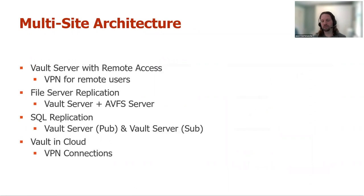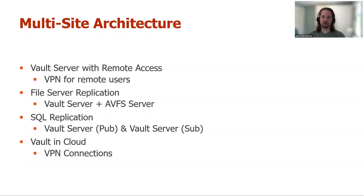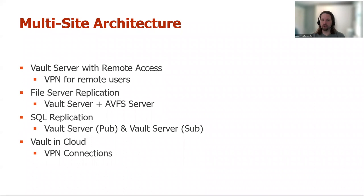Most people start off with one Vault, but eventually when you have remote users connecting through VPN or a remote site connected via point-to-point VPN, performance becomes an issue. As you get more users or more active remote users, they're going to want more performance. That's where thinking about an AVFS server makes sense — it moves the file store to the same office as end users, really helping check-in and check-out performance.